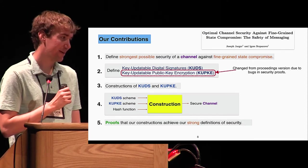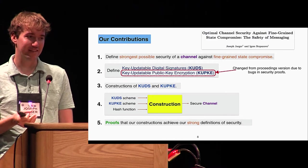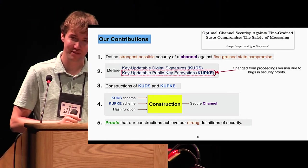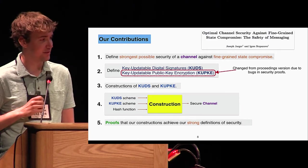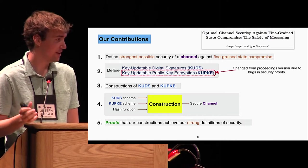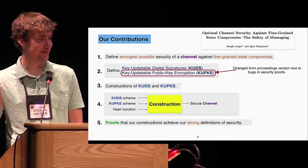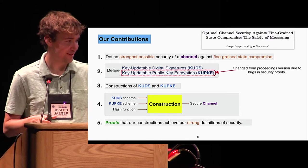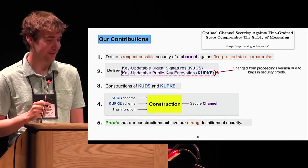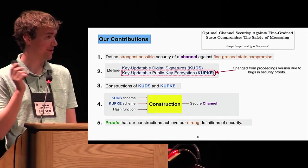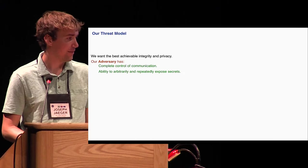One quick point I should make: this public key encryption actually differs slightly from what we had in the proceedings version. We realized there was a small bug in our original proof. My co-author is supposed to push the full version to ePrint today, which fixes this. It might be up there now, I'm not sure.